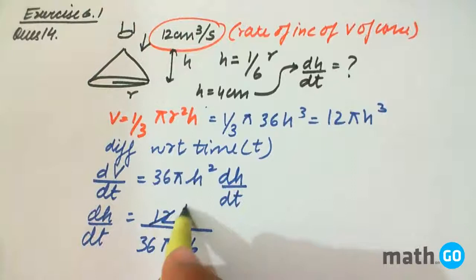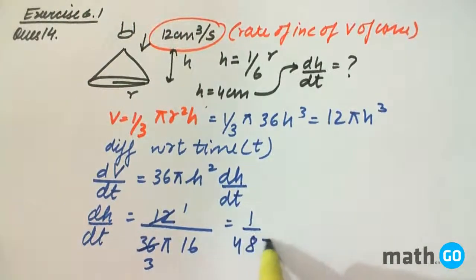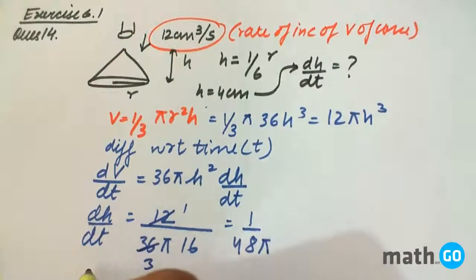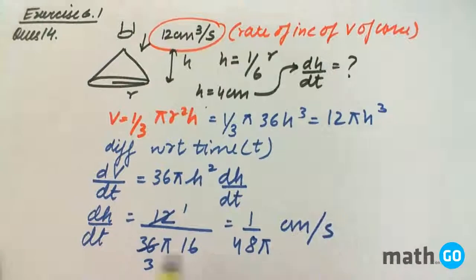So it becomes 1 by 48 pi for dh by dt. So its unit will be centimeter per second. Units are important in these types of questions.